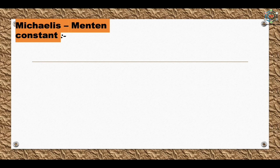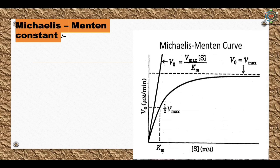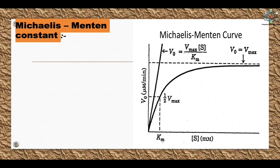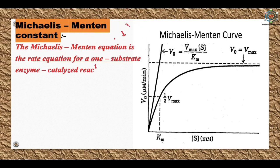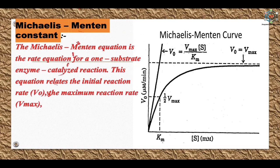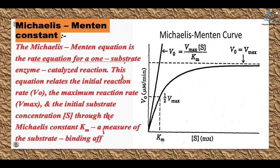In substrate concentration, there is an important concept called the Michaelis-Menten constant. In an enzymatic reaction, the rate depends on substrate concentration. At low substrate concentration, the rate is proportional to substrate concentration. The enzyme shows a saturation effect, which led Michaelis and Menten to develop a general theory of enzyme action and kinetics in 1913. According to this theory, the Michaelis-Menten equation is the rate equation for a one-substrate enzyme-catalyzed reaction, relating initial reaction rate, maximum reaction rate, and initial substrate concentration through the Michaelis constant Km, which measures substrate binding affinity.